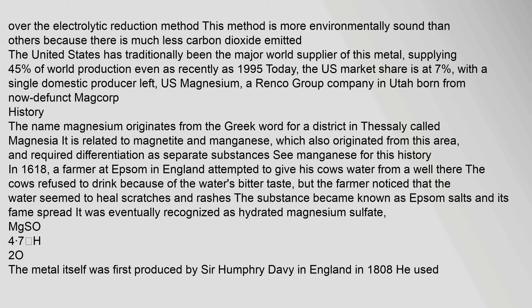This method is more environmentally sound than others because there is much less carbon dioxide emitted. The United States has traditionally been the major world supplier of this metal, supplying 45% of world production even as recently as 1995. Today, the U.S. market share is at 7%, with a single domestic producer left — U.S. Magnesium, a Renko Group company in Utah.